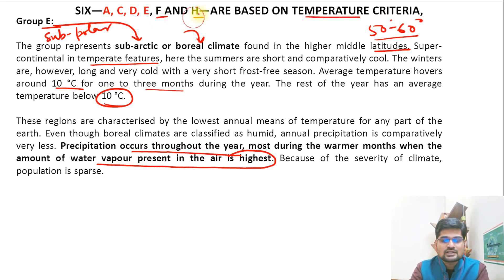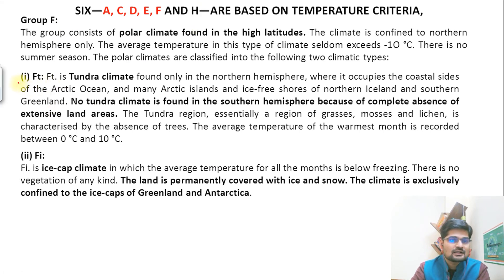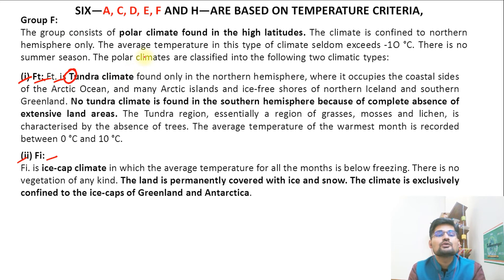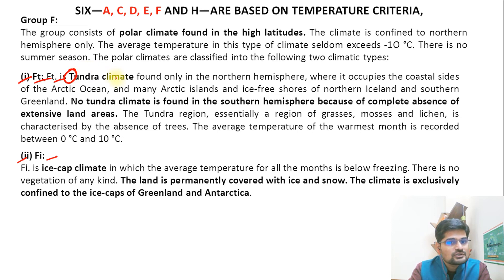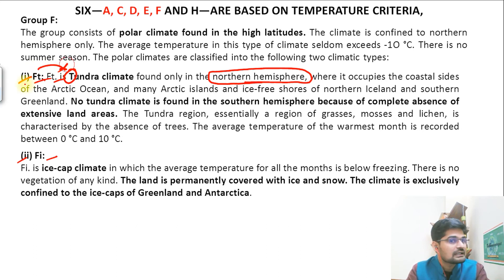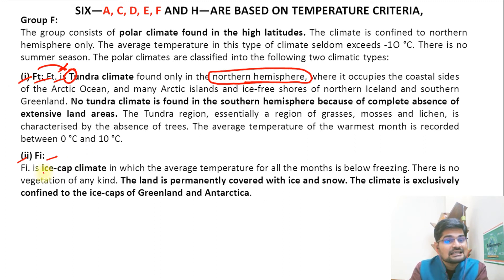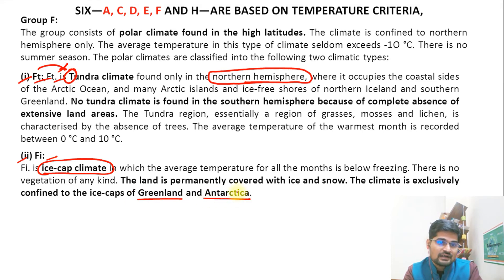Group F has two subtypes: FT and FI. FT is for Tundra climate — T for Tundra — and it is found in the northern hemisphere only. FI is for ice cap — I for ice — and this occurs in both hemispheres, with both Greenland and Antarctica having this ice cap climate. So FT is only in the northern hemisphere, while FI is also found in the southern hemisphere.